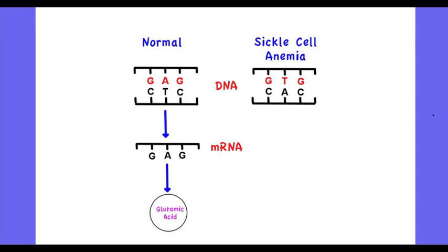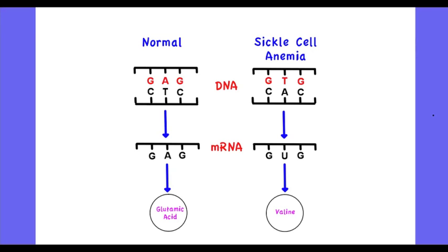The A in GAG is changed to T, giving GTG. When that single base substitution is transcribed, it produces a different codon on mRNA and thus produces a different amino acid after translation — that amino acid is valine. The IB curriculum requires you to know the change from GAG to GTG.